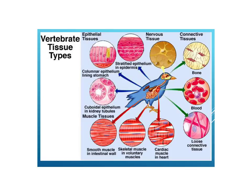We have nervous tissue, which consists of the tissue you would find in the brain, in nerves, and in the spinal cord. We have connective tissue, which includes bone, cartilage, and even blood — blood is considered connective tissue — and fat is also connective tissue. Then we have muscle tissue, which has three kinds: smooth muscle, skeletal muscle, and cardiac muscle, which is only found in the heart. Skeletal muscle is found in your arms and legs, and smooth muscle lines your organs such as in your intestines.